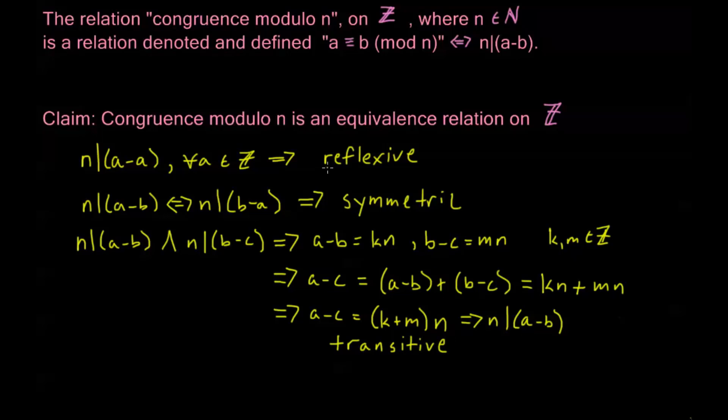Right? So, the congruence modulo n is reflexive, it's symmetric, and it's transitive. So, congruence modulo n is an equivalence relation on z. Now, when we're talking about congruence, congruence is a special kind of equivalence relation.